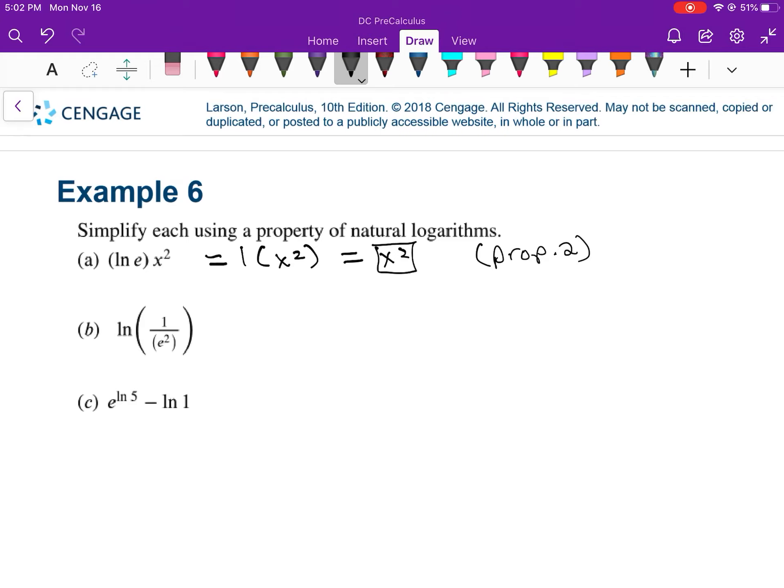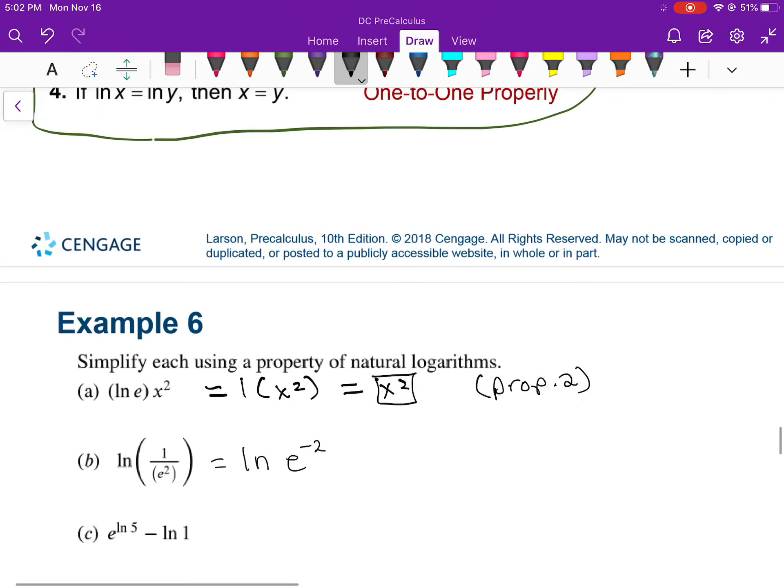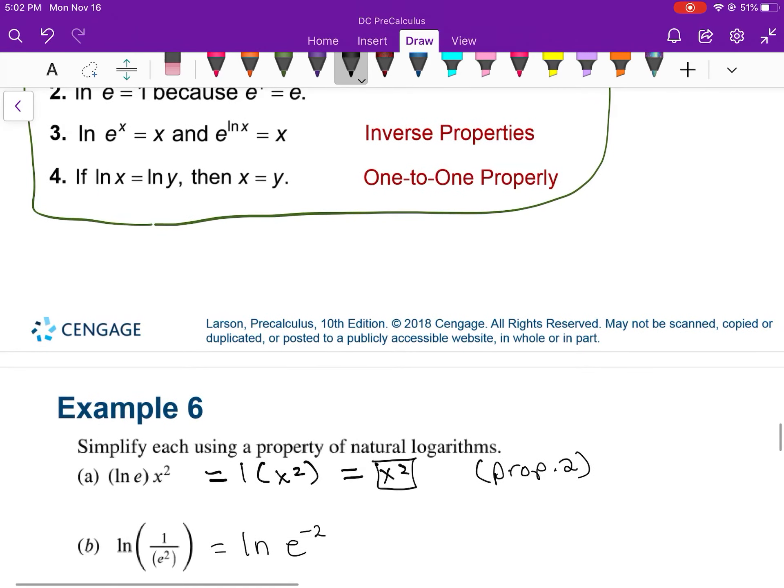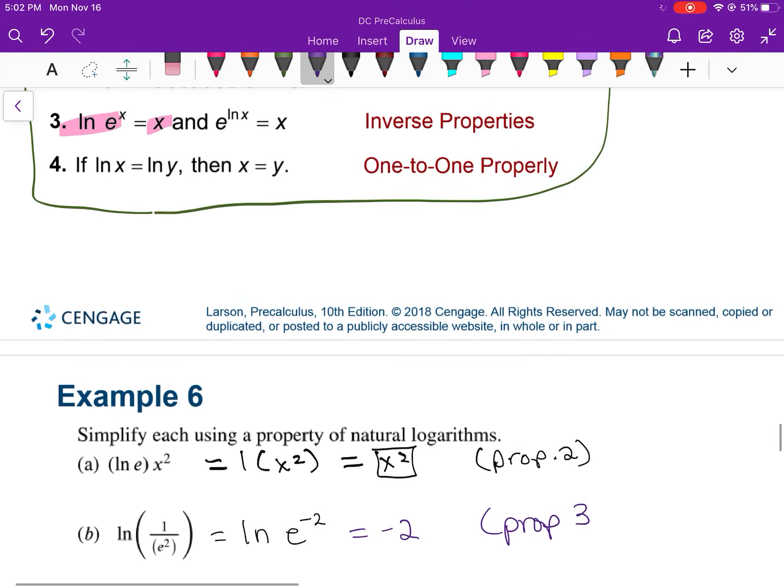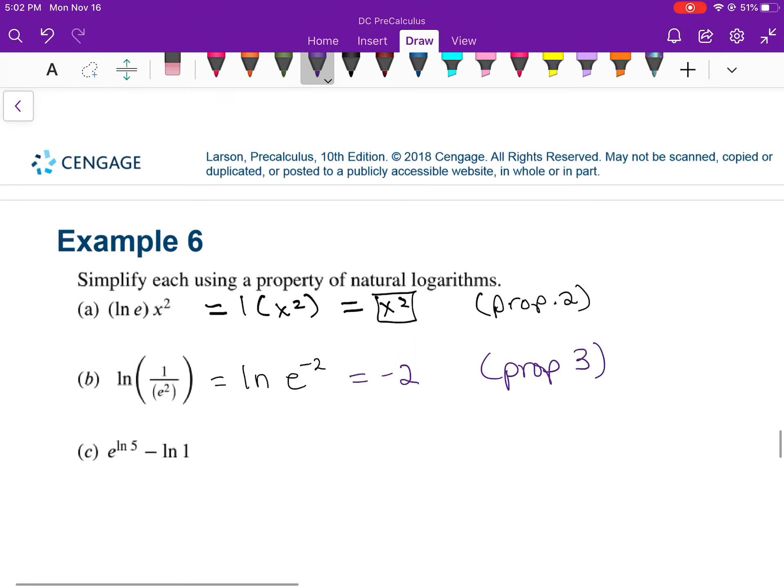For this next one, I'm going to write it as e to the negative second, and then I'm going to compare that to the ln of e to the x right here, and that equals x. So I could tell you then that this equals negative 2. And that's property number, I believe that was 3. That's your inverse property.